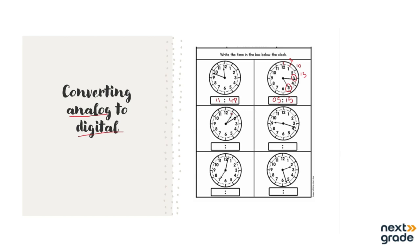Moving to the next example: the hour hand is at 1 and the minute hand is at 2. That means the digital clock will show 1 over 10 — 10 minutes past 1 o'clock.